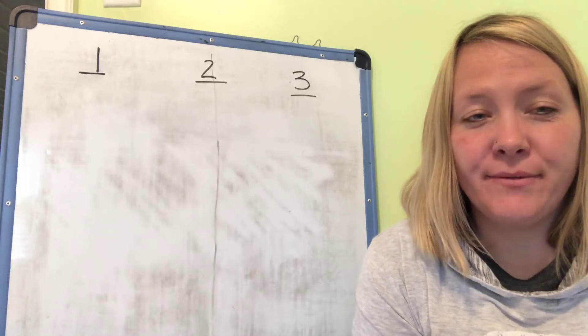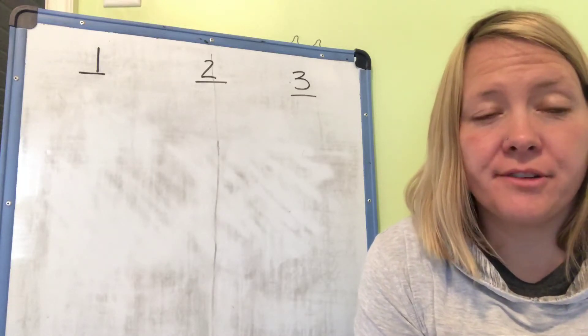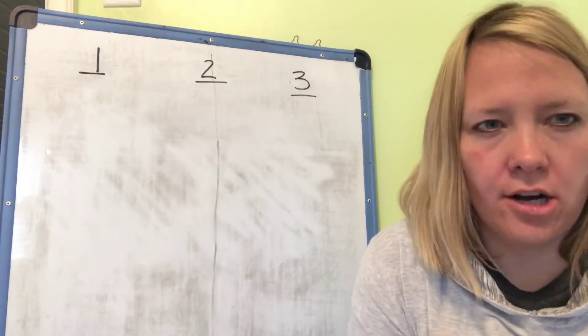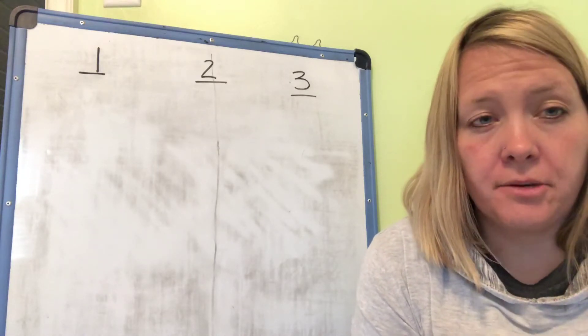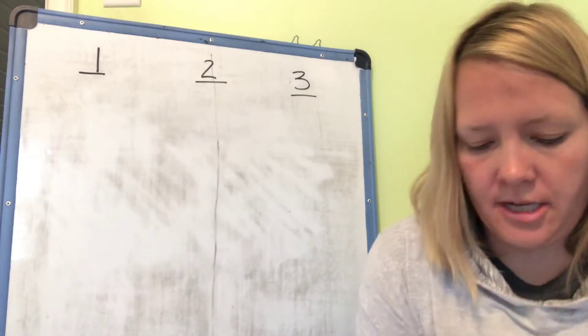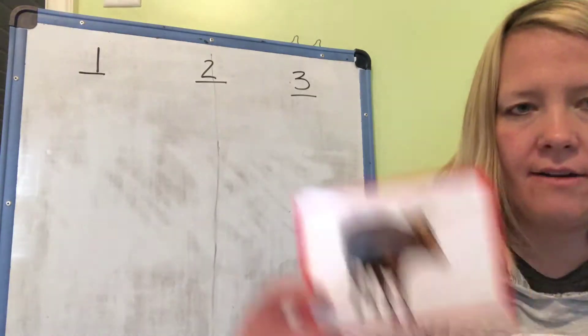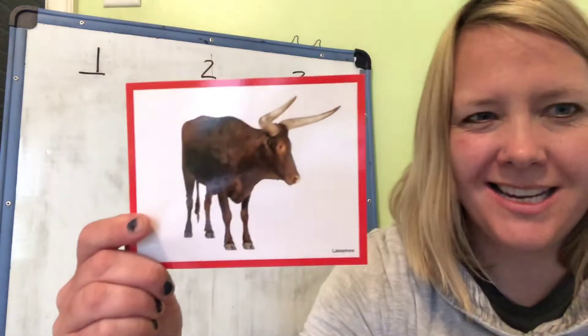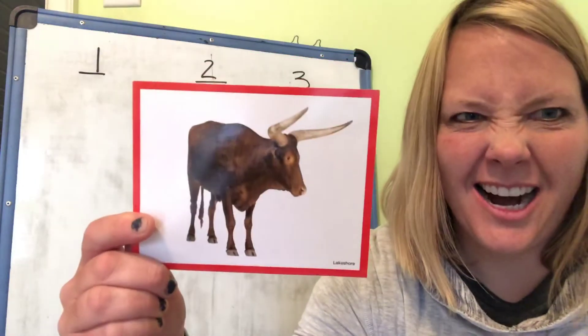Hey everybody, it's time for our syllable chant for the letter O. Are you ready? Alright, our first word is a picture of an ox.